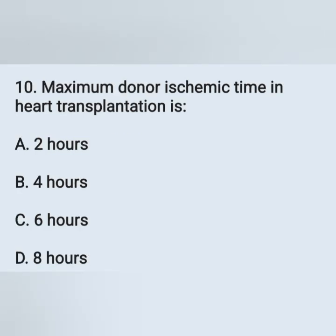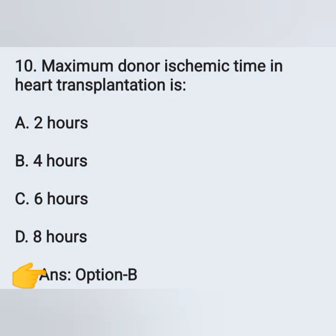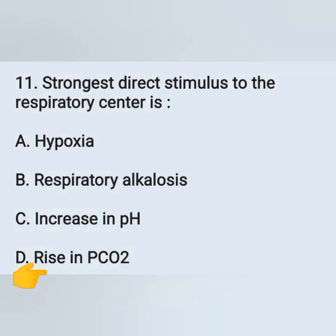10th question: maximum donor ischemic time in heart transplantation is — option A: two hours, option B: four hours, option C: six hours, option D: eight hours. The correct answer is four hours — option B.